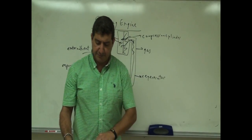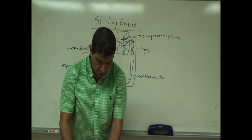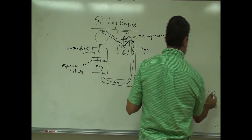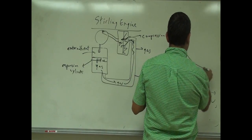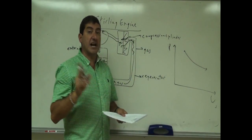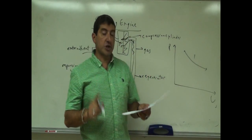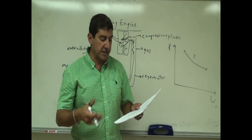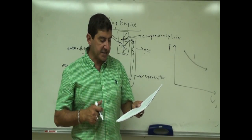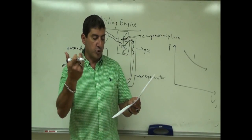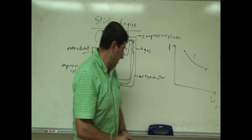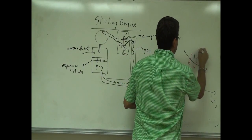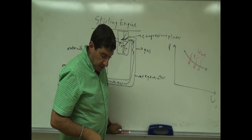The PV diagram for the Stirling Engine looks like this. You start over here with pressure and volume. The first step is isothermal — isothermal expansion. The expansion space and associated heat exchanger are maintained at constant high temperature, and the gas undergoes near isothermal expansion, absorbing heat from the hot source — Q hot coming in right here.